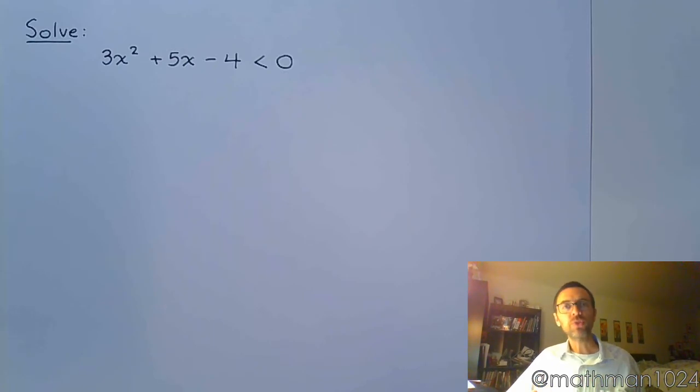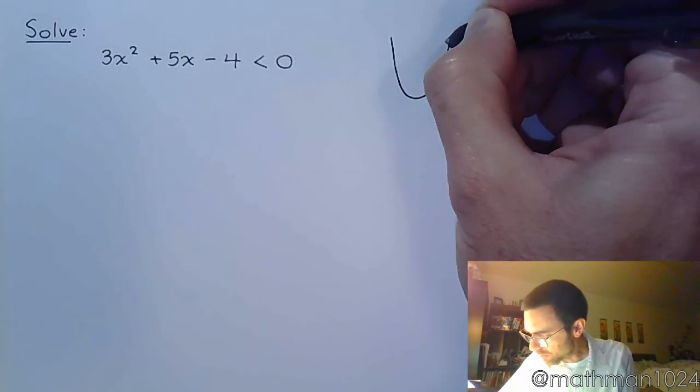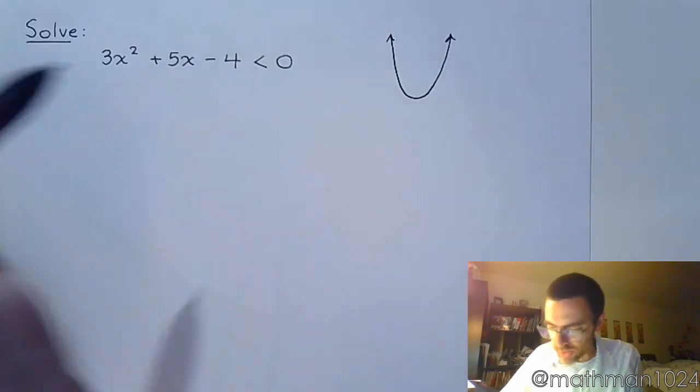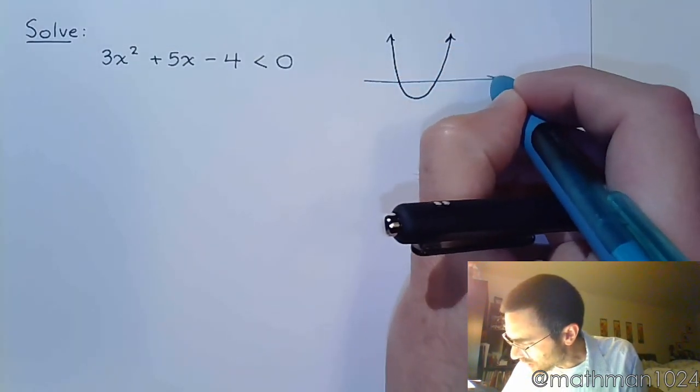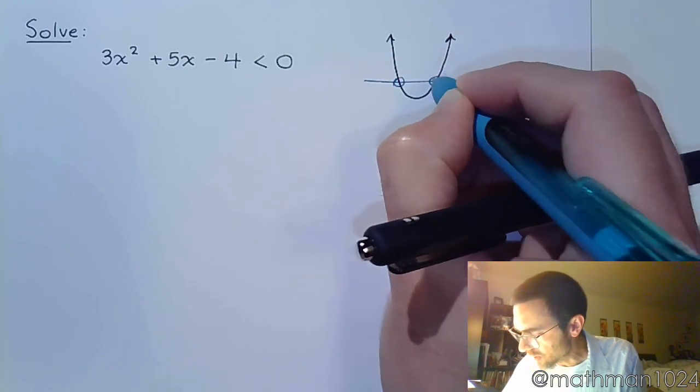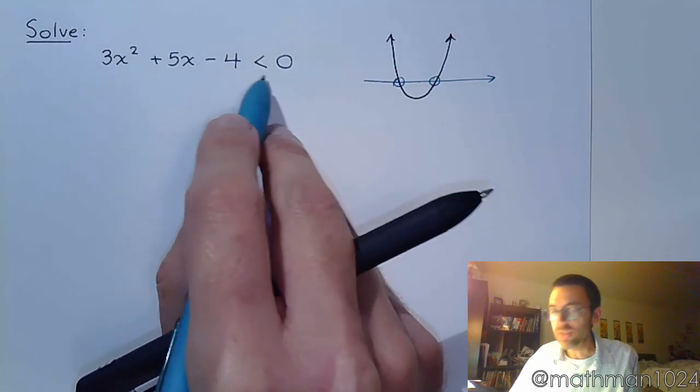So we need to find those critical values. And you know what, since this is quadratic, we kind of have in mind that it's going to have this shape right here. And as long as we can find out where it crosses the x-axis, then we're going to be in good shape because it says less than 0.